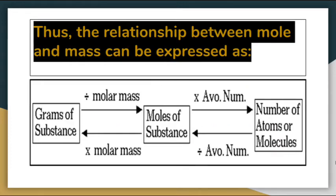The relationship between mole and mass: moles can be converted into mass in grams, and moles can be converted into number of atoms, molecules, or ions. To convert mass to moles, divide by molar mass. To convert moles to mass in grams, multiply by molar mass. To convert number of atoms or molecules to moles, divide by Avogadro's constant. To convert moles to number of atoms or molecules, multiply by Avogadro's constant.